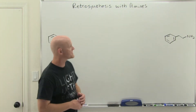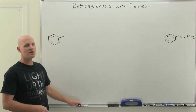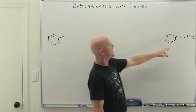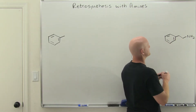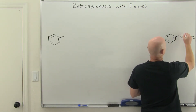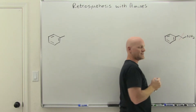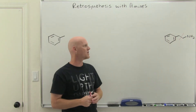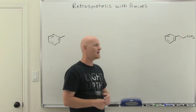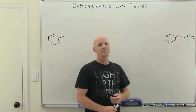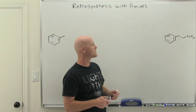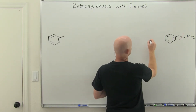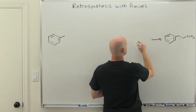In our first retrosynthesis example, it's easy to see where the carbons match up: seven carbons here and an eighth carbon there. We'll definitely have to make that bond — that's obvious. Thinking about all the different ways to make amines, this is a primary amine. Some options that come to mind: we could potentially make this by reducing a nitrile.